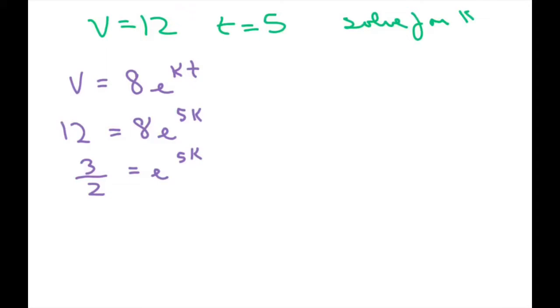So let's take ln of both sides. Move this 5k in front. So basically, we have ln of 3 over 2 equals 5k times ln of e to the 5k power.